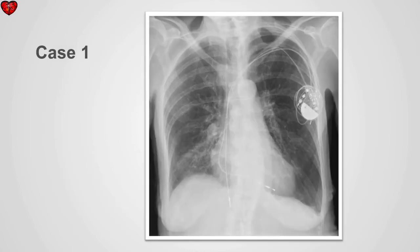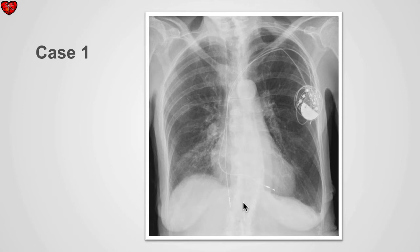In this case, an AV sequential pacemaker has been inserted. If we follow the ventricular lead, we can identify the tip of the lead in good position within the right ventricle. If we follow the atrial lead, we can see that the lead extends across the atrium into the inferior vena cava below the hemidiaphragms.